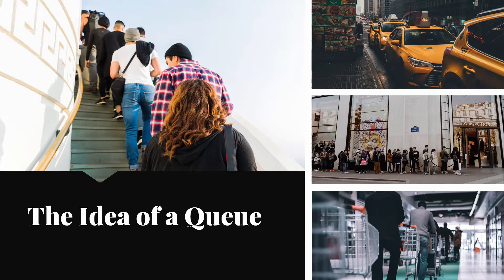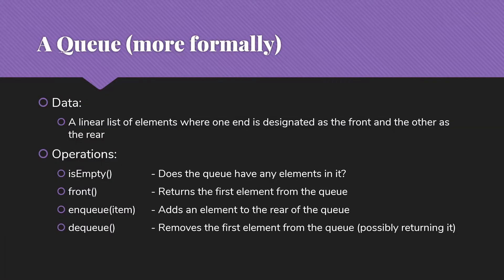And that is exactly what a queue is all about. More formally, a queue is a linear list of elements where one end is designated as the front and the other as the rear. We have operations that are very similar to our stack operations: isEmpty, which checks if the queue has any elements; front, which gives the value of the first element; enqueue, which adds an element to the rear; and dequeue, which removes an element from the front.